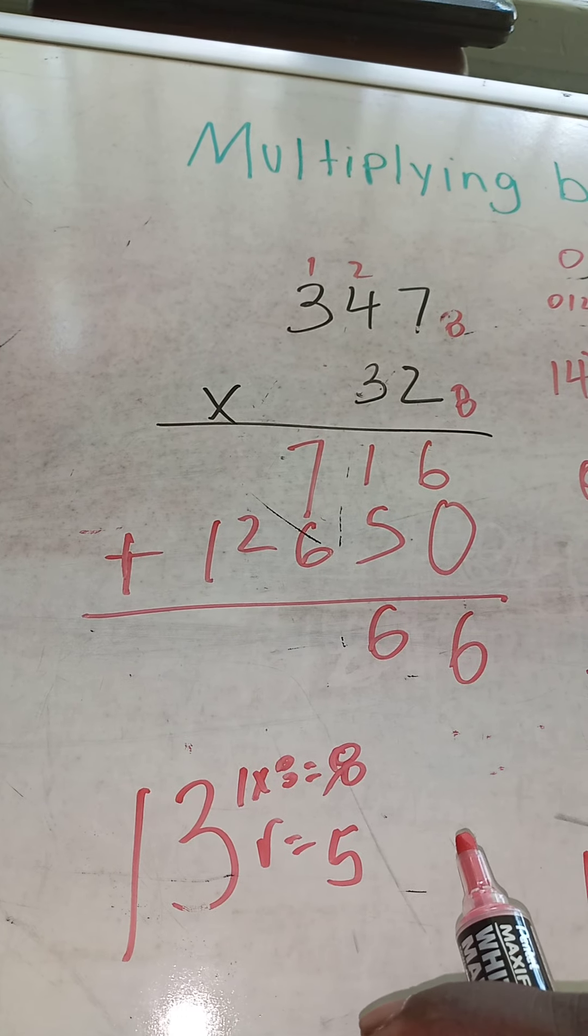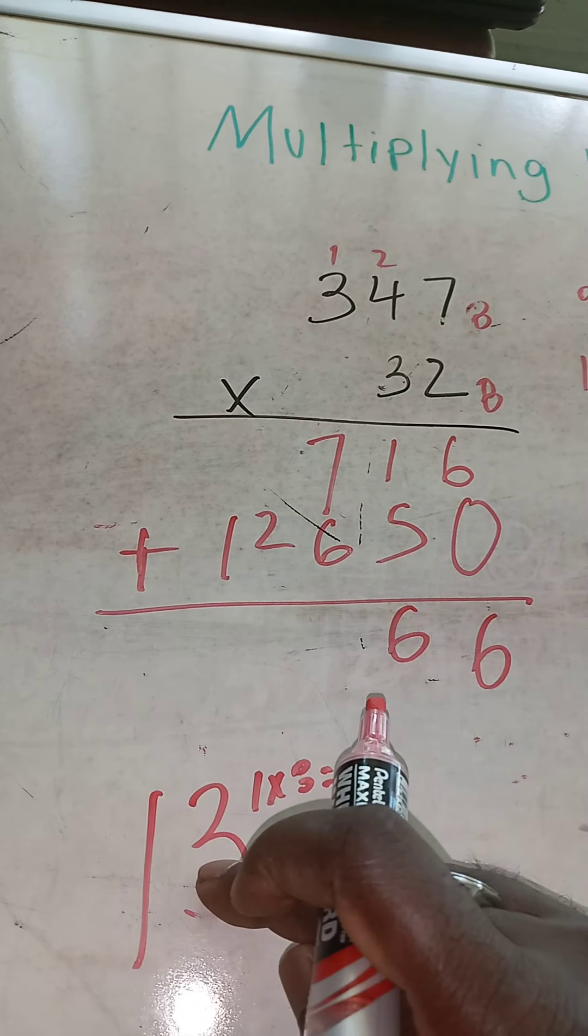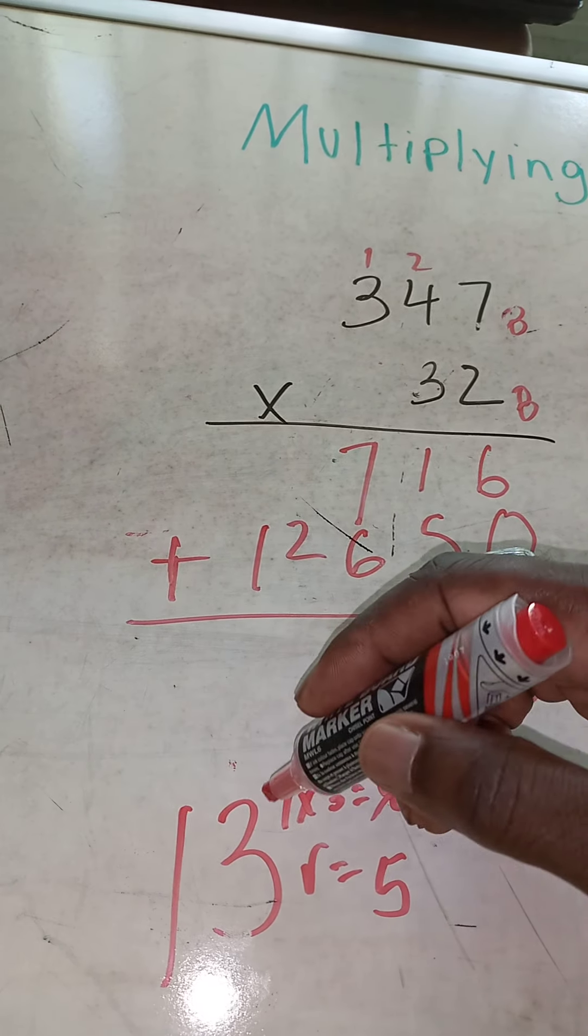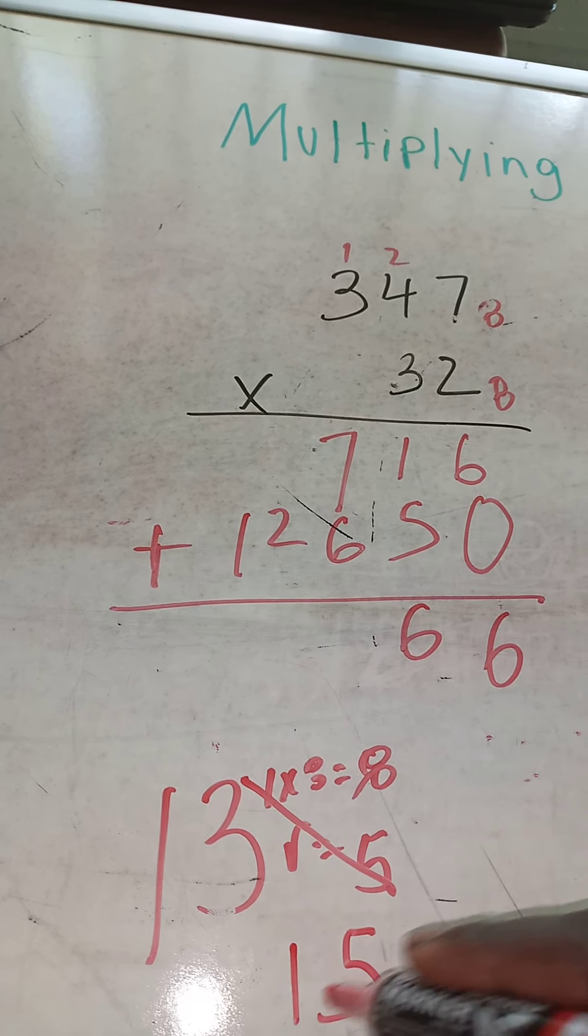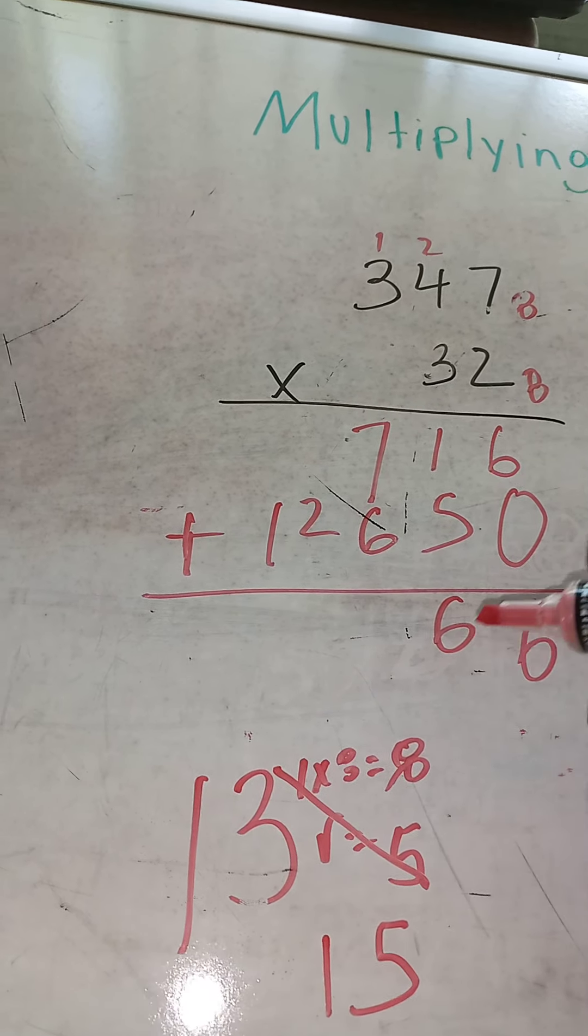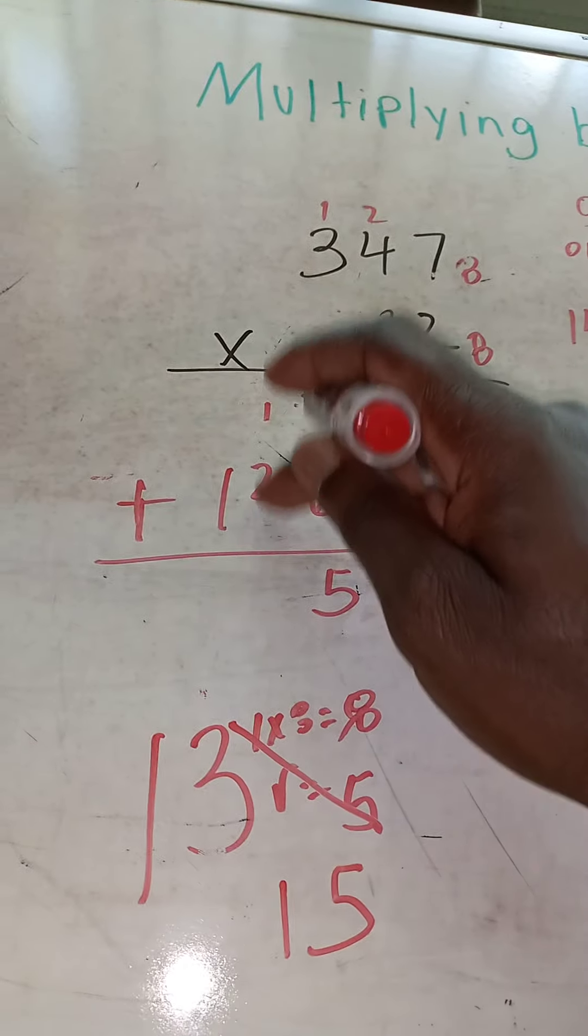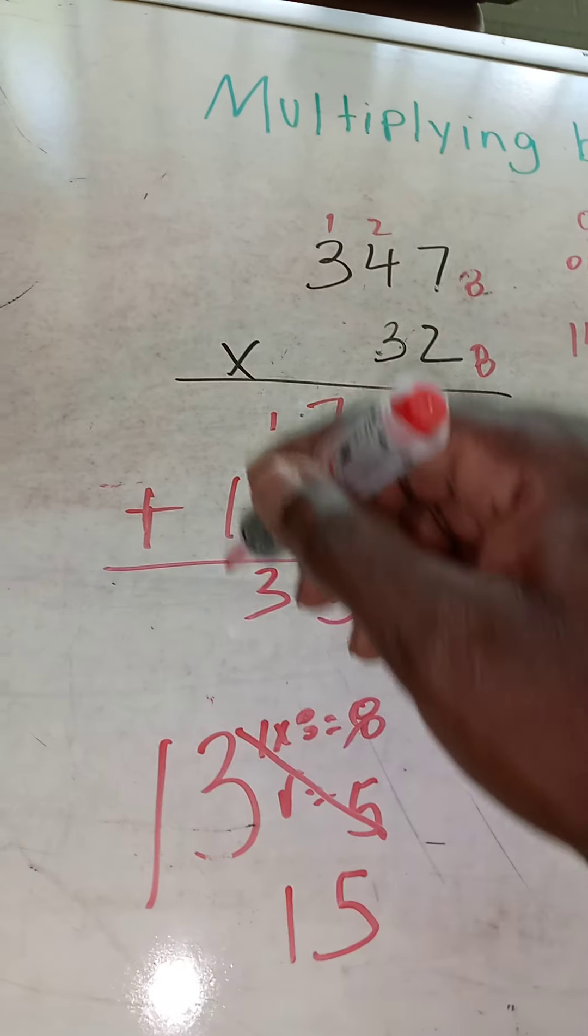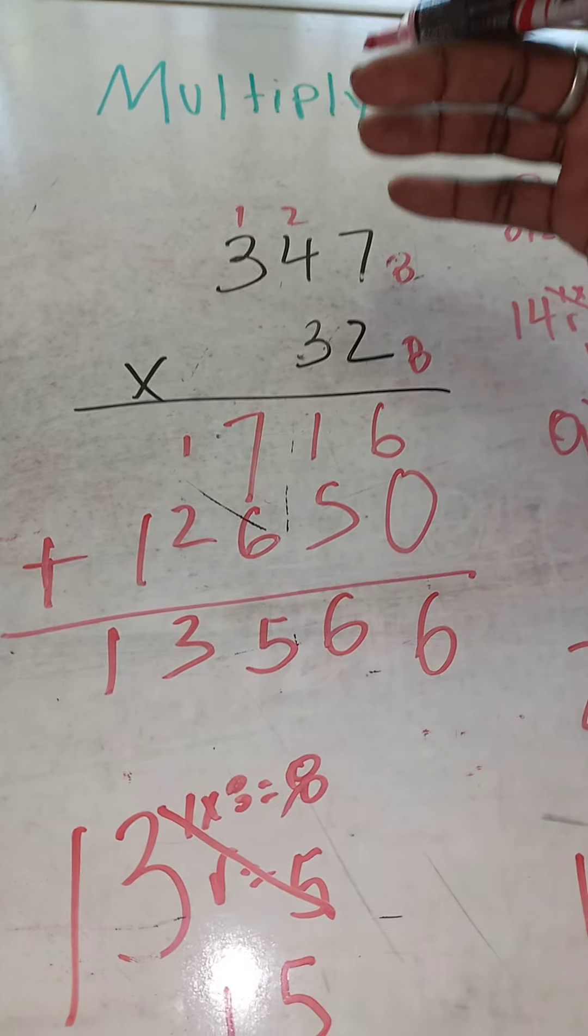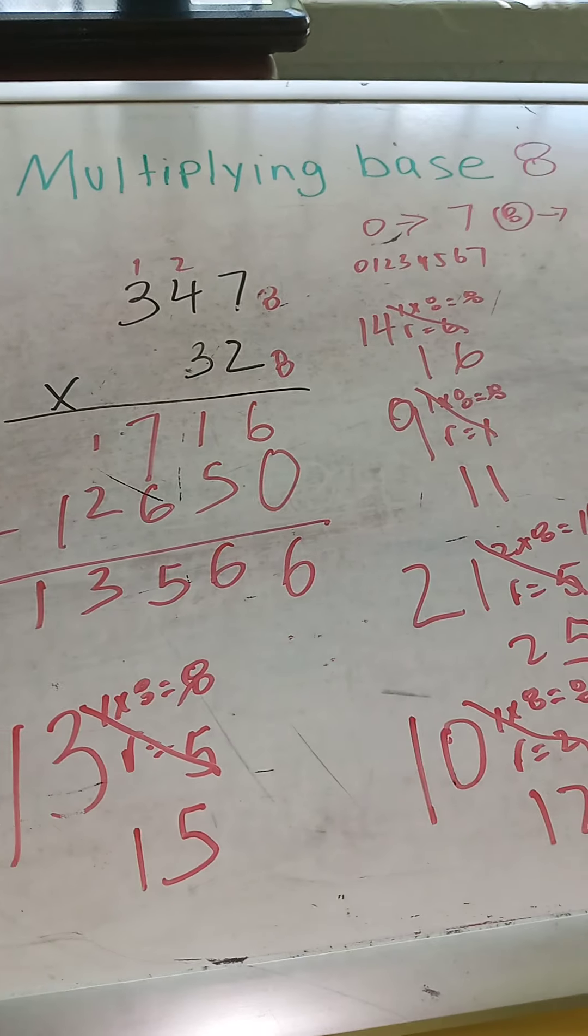When you're doing your addition, that's 8 minus 13 equals 5. So we have 1, 5. This 1 is 8, 8 plus 5 equals 13. We put down the 5 and we carry the 1. 2 and 1 is 3, and 1. So that would be your answer when you multiply 347 times 32 in base 8.